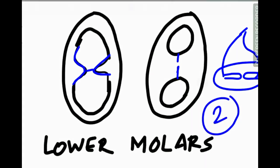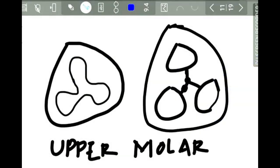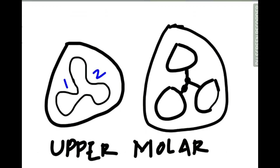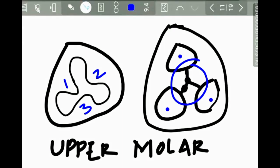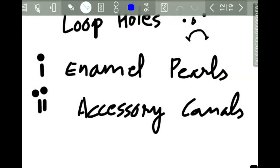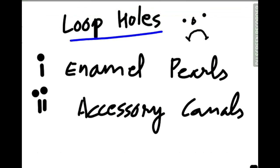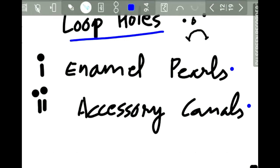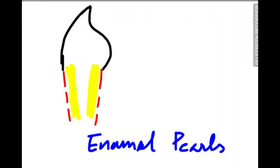In the upper third molars, there are three such diaphragms which fuse to form three roots. However, this process of root formation is not perfect. There are two notable loopholes: the formation of enamel pearls and the formation of accessory canals on the root surface.